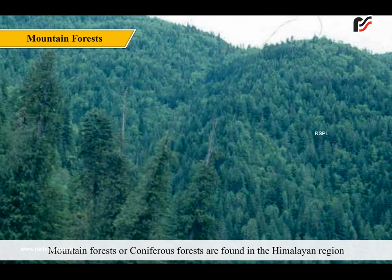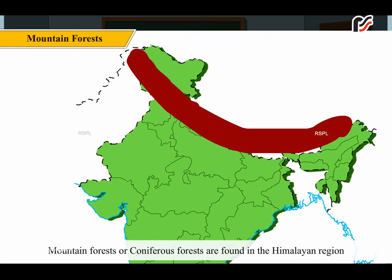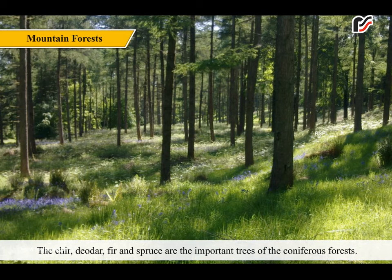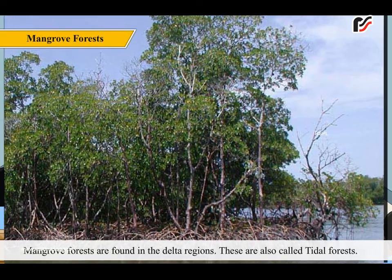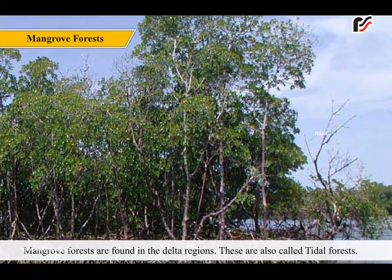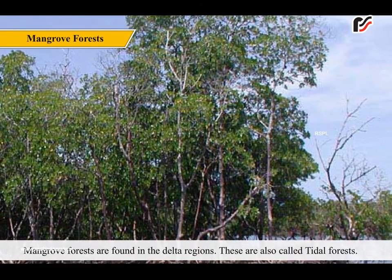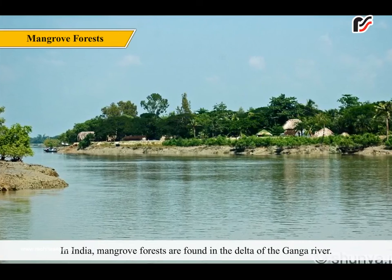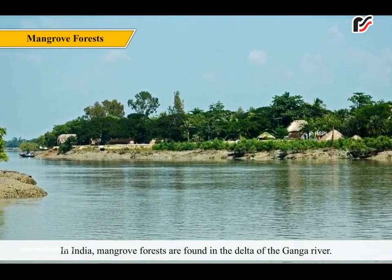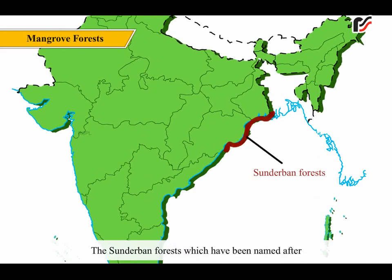Mountain forests or coniferous forests are found in the Himalayan region and other hilly areas. Different types of trees are found at different heights. The cheer, deodar, fir and spruce are the important trees of coniferous forests. Mangrove forests are found in the delta regions and are also called tidal forests. The sundri tree is an important tree of these forests. In India, mangrove forests are found in the delta of the Ganga River. The Sundarbans forests, named after the sundri tree, are found in West Bengal and Bangladesh.